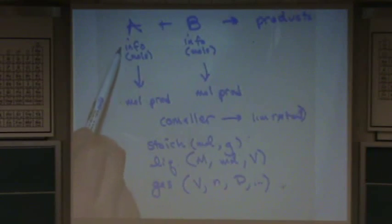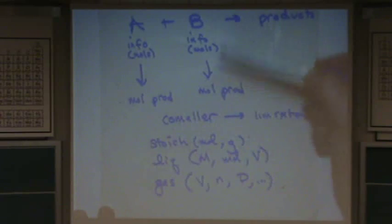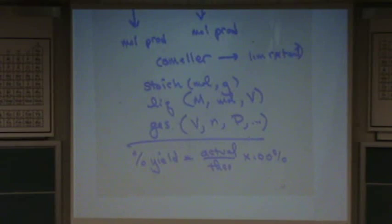You always convert the given info to moles and then change it to moles of the product. You do it for both reactants. So if you have two or more reactants where information is given that is related to moles, you have a limiting reactant problem. These are all usually connected to a percent yield, where you have the actual divided by the theoretical times 100%.